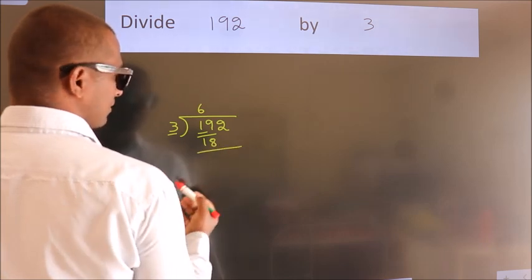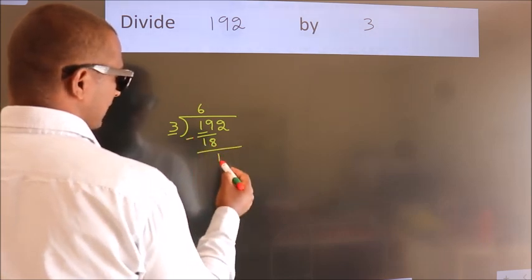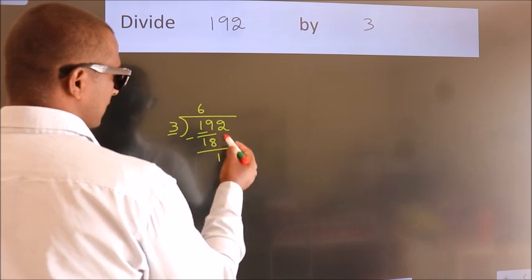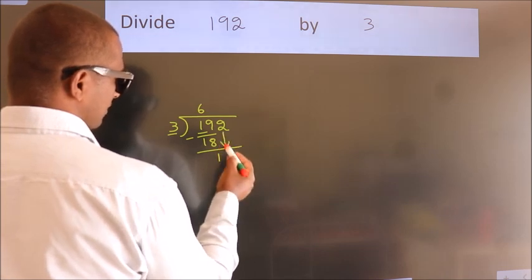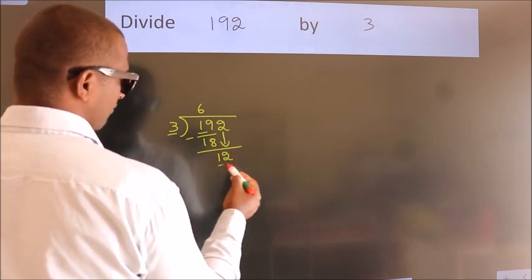Now we should subtract. We get 1. After this, bring down the beside number. So 2 down, so 12.